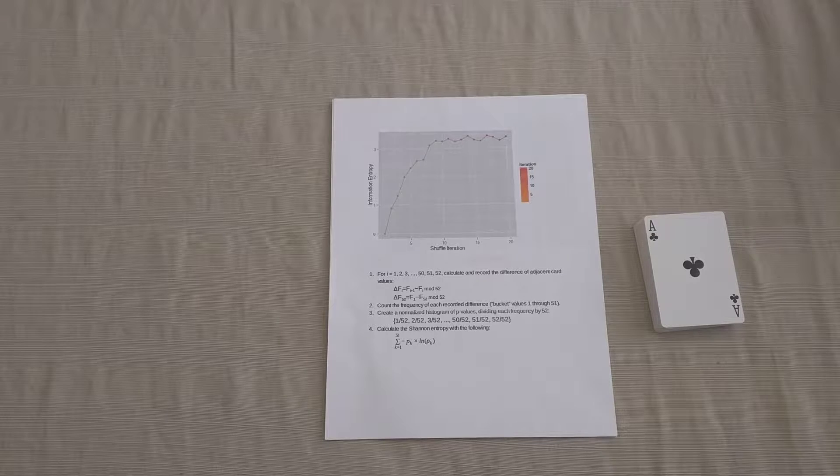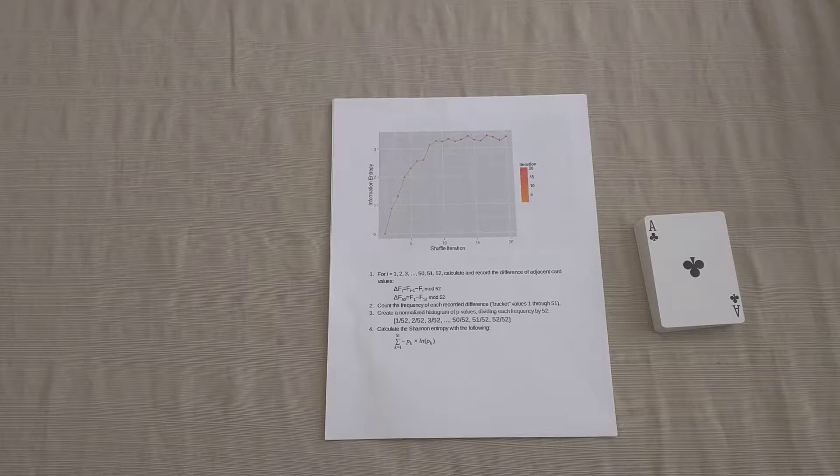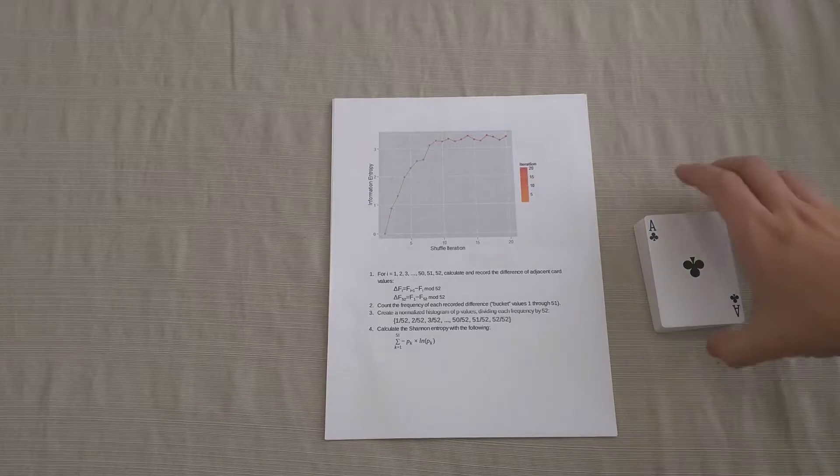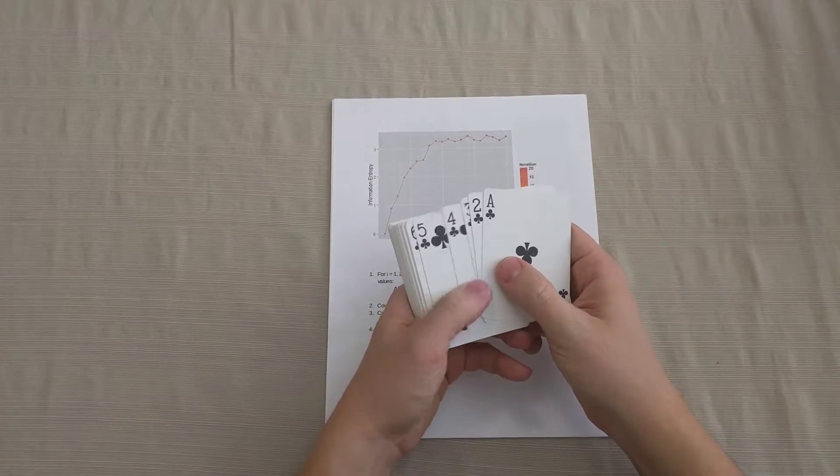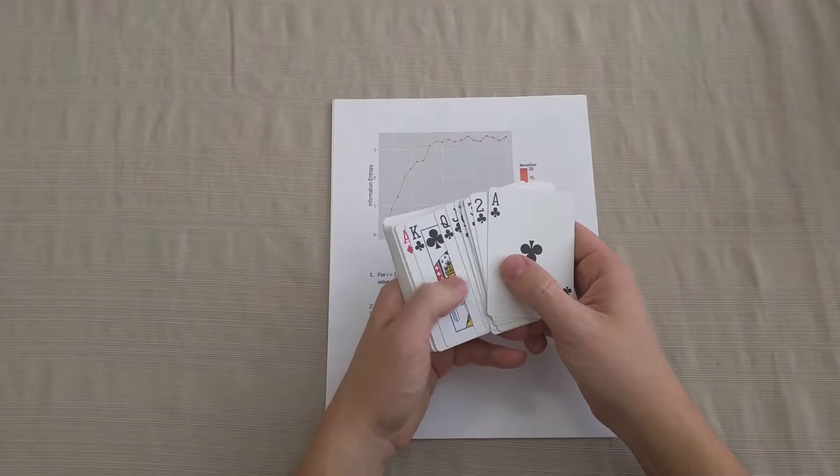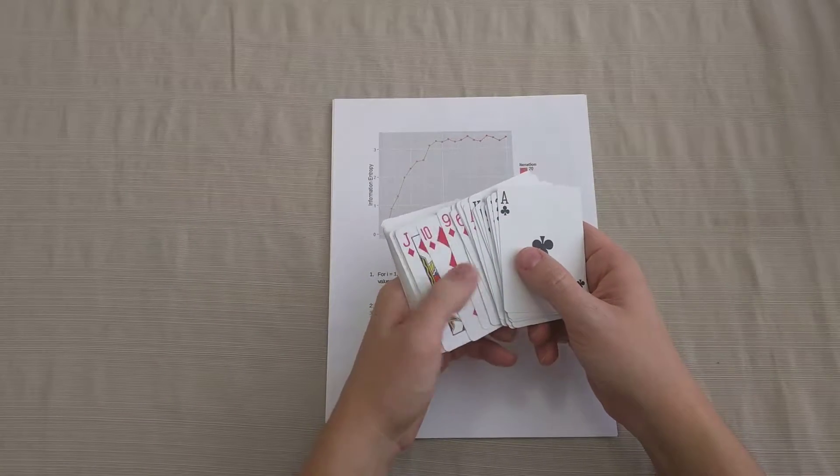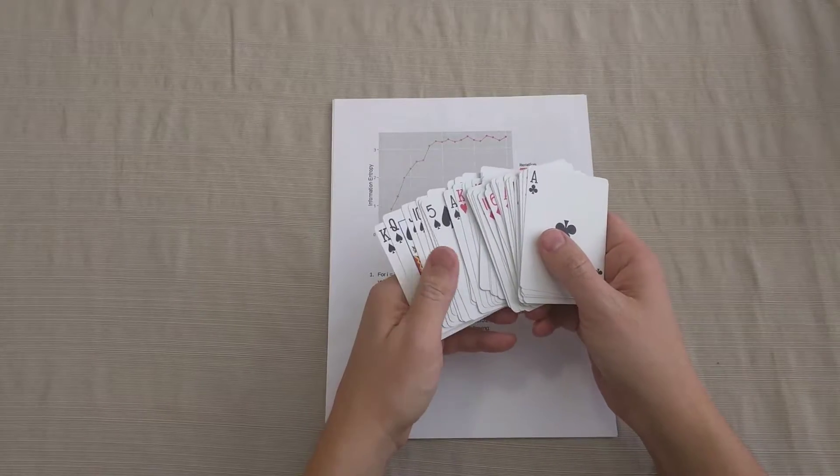Shannon entropy is a way to quantify randomness in a sequence or in a set of data. So here we're going to look at that. Here I've got my deck and I have them in bridge order, which means that I have the deck in order by suits. So clubs first, followed by diamonds, followed by hearts, and then followed by spades.